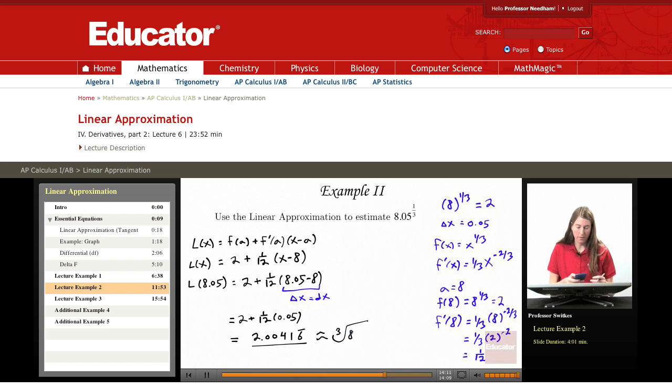Now let's check how we did. So the actual cubed root of 8.05, calculator value for it is the following. It's about 2.004158 or so.